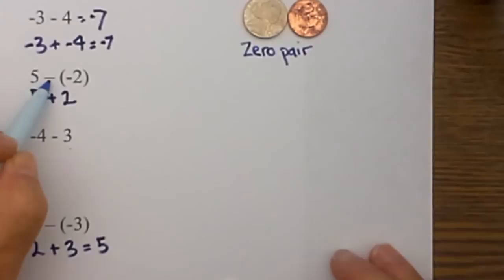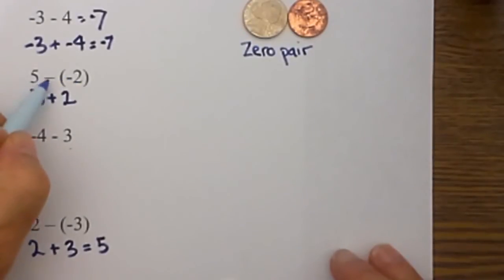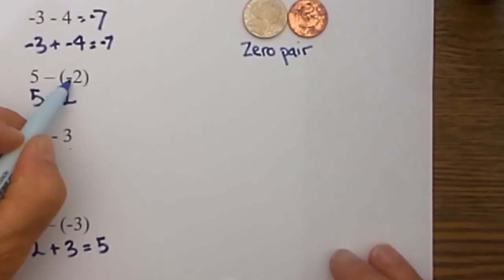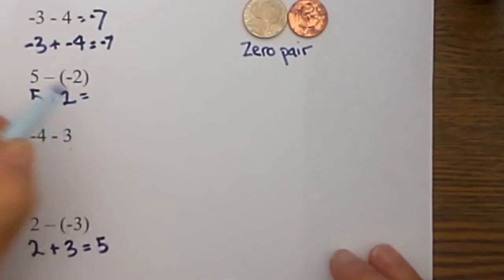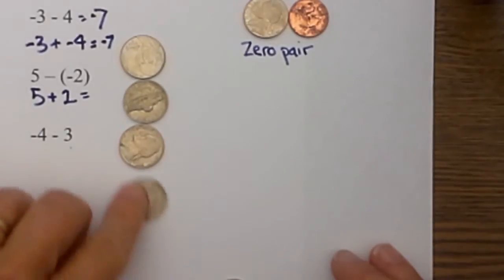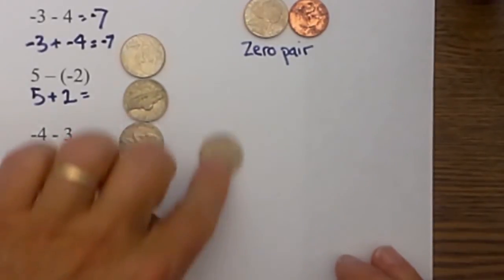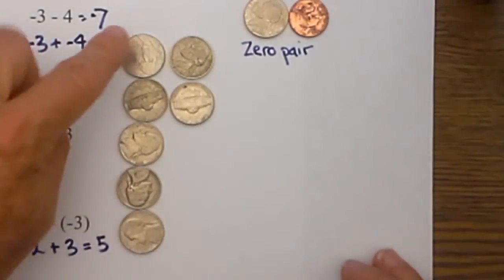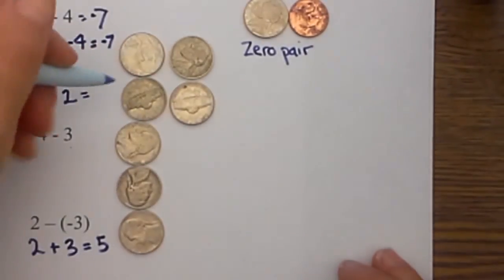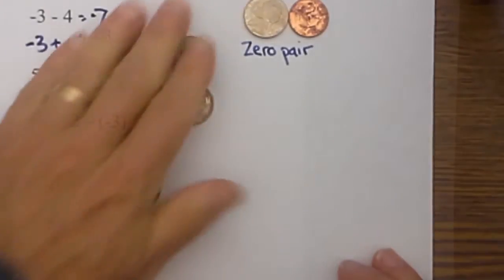Let's work five minus a negative two. I am going to go ahead and change the subtraction to addition and then change the sign of the number directly behind the subtraction sign, so that becomes a positive two. I will put five counters for the first number and two for the second number, and that gives me seven — positive seven.